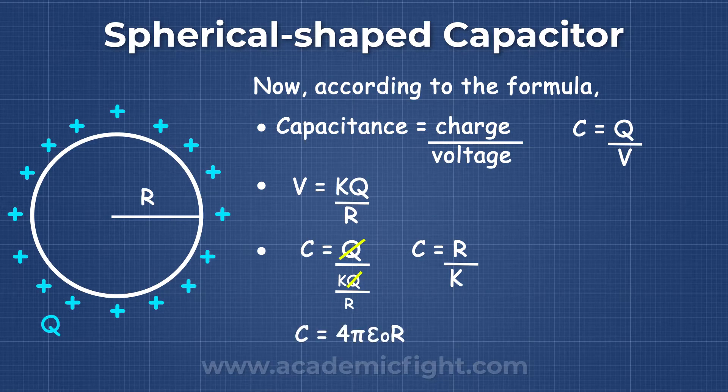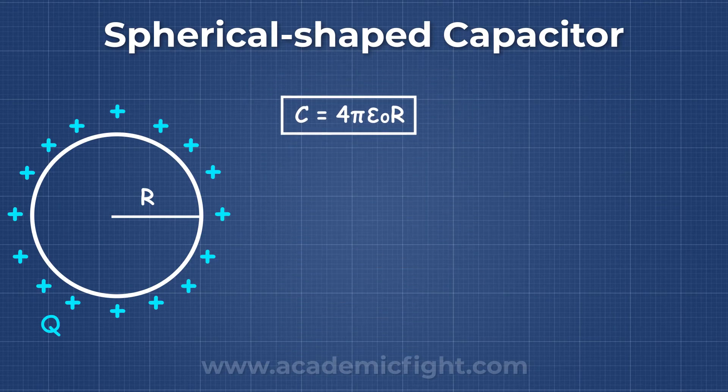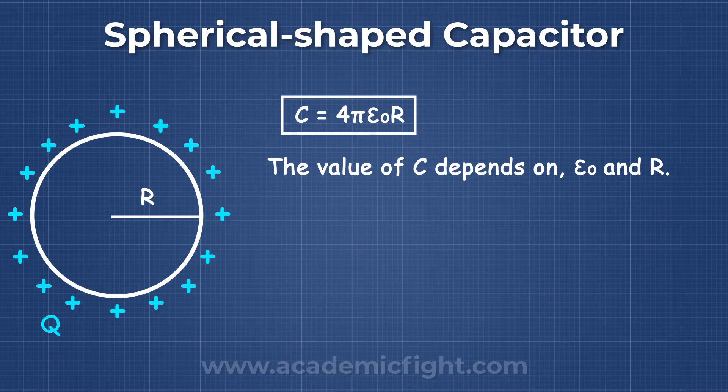Putting the value of K, we get C is equal to 4π epsilon R. From the equation, we can see that the value of C depends on epsilon and R.